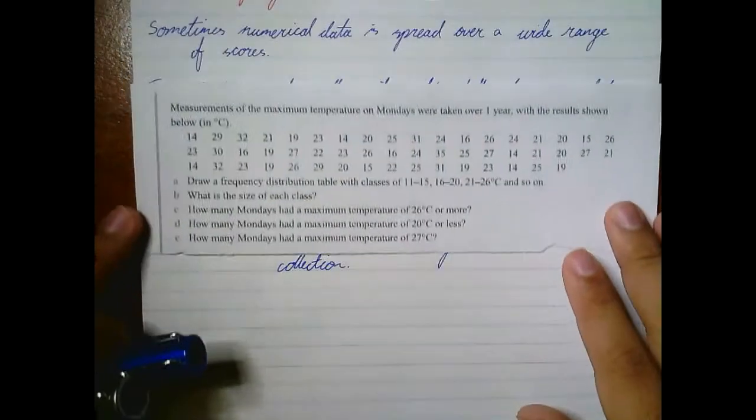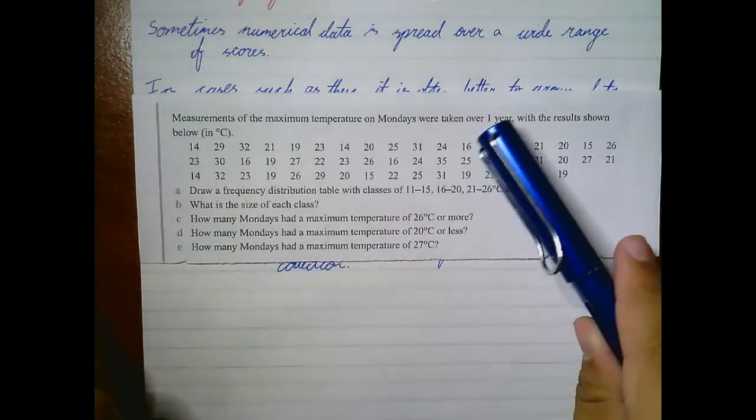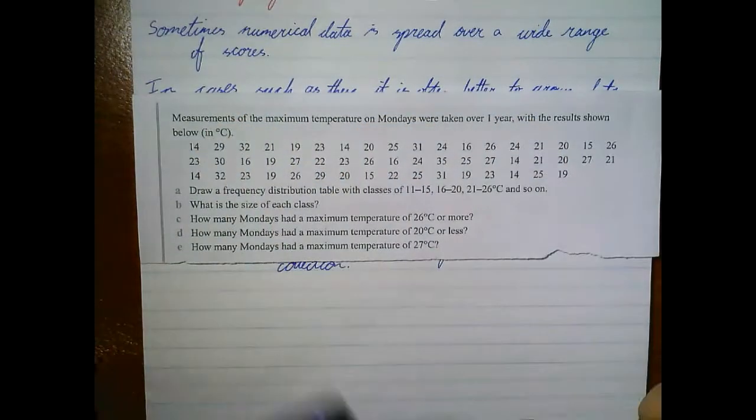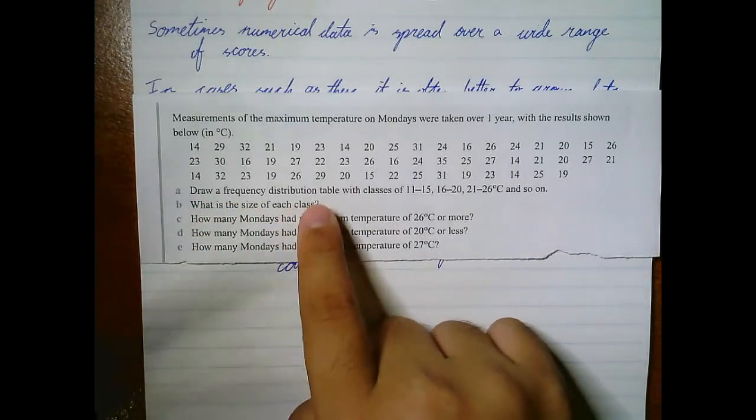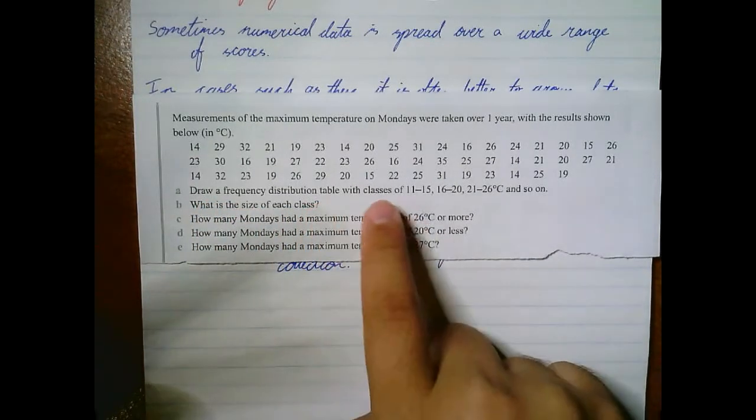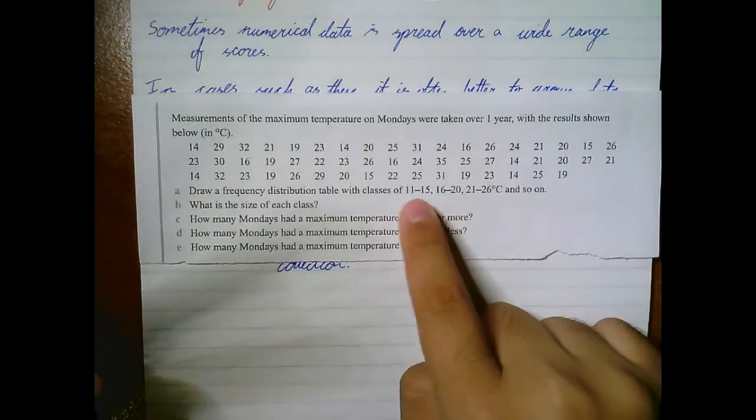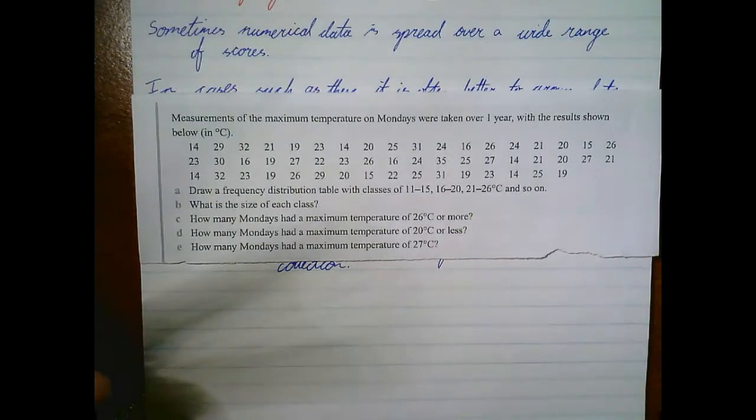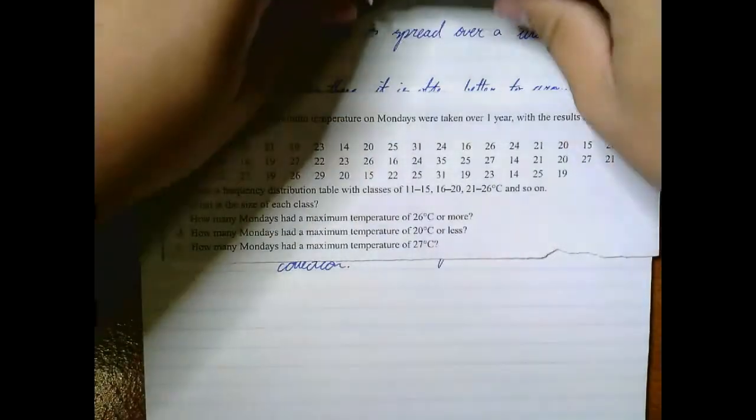Here we have the measurements of the maximum temperatures on Mondays taken over one year with the results shown in degrees Celsius. So we want to draw a frequency distribution table with classes or groups. You can take a look - it goes from 11 to 15, 16 to 20, 21 to 26, and so on. So let's draw up a frequency table for that.